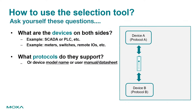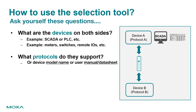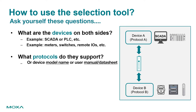How do I use the selection tools? It's easy. You just need to consider the following questions. What are the devices on both sides? For example, device A might be SCADA or PLC, and device B might be meters, switches, or remote IOs. You also need to ask what protocols they support.